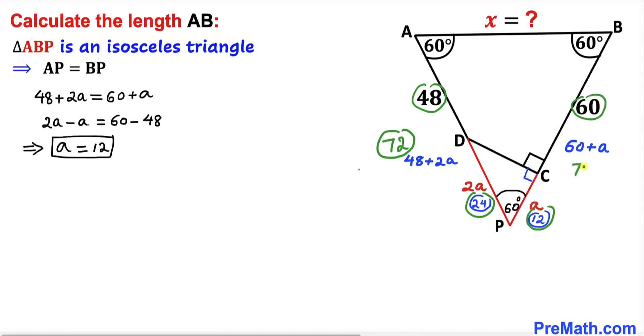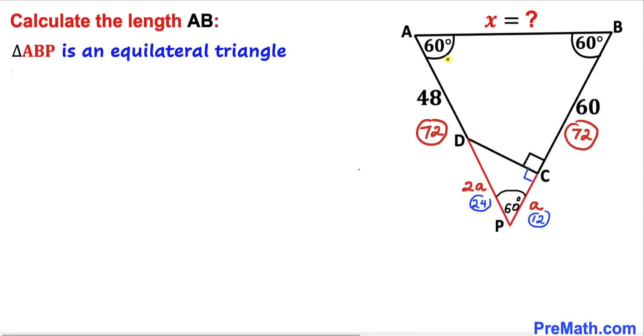Triangle ABP is an equilateral triangle since all three angles are 60 degrees. Therefore, AB = AP = BP = 72 units.